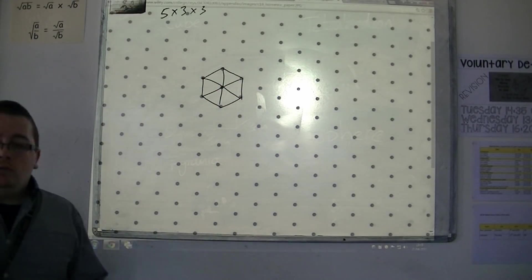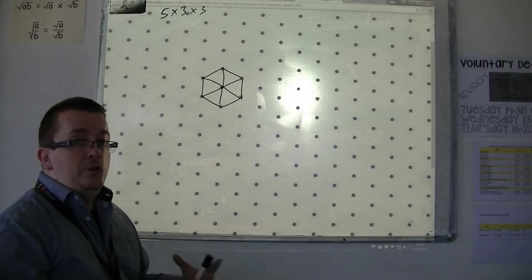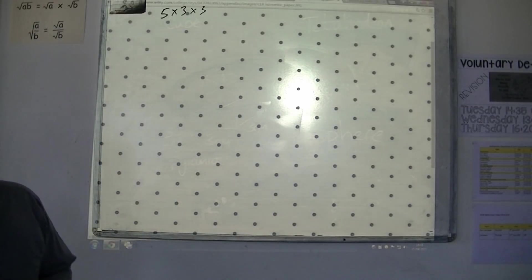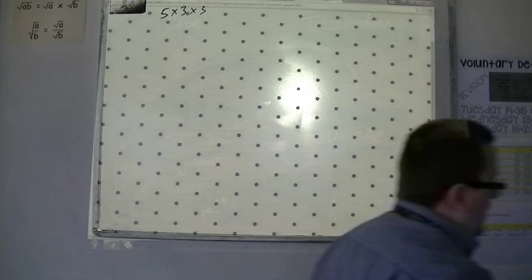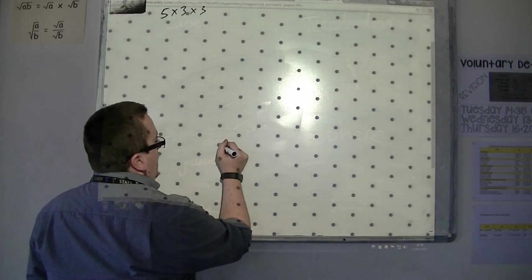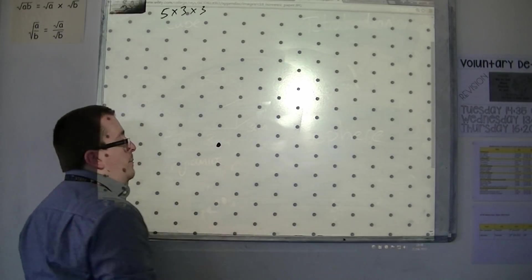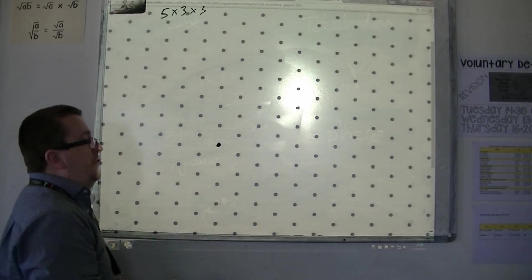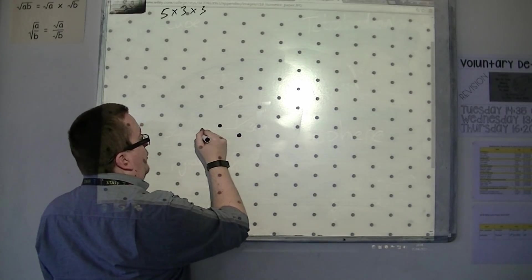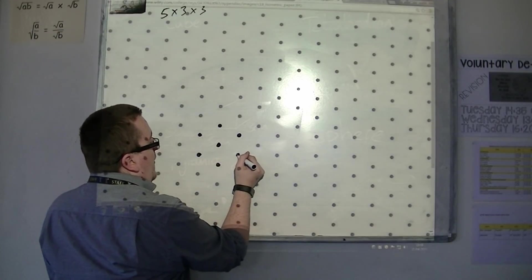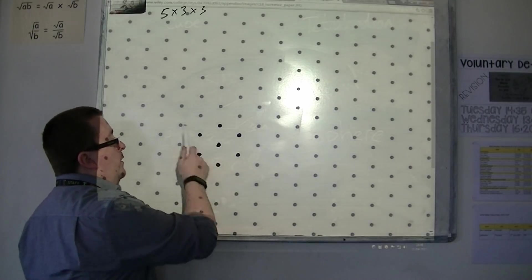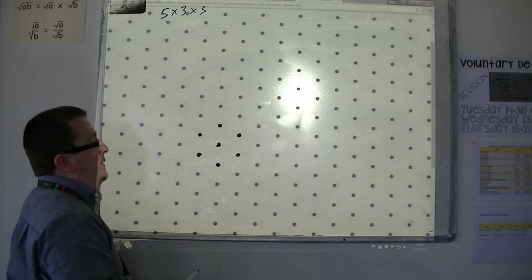Now, there are specific ways of using isometric paper. There are rules to how you can draw using it. Any point in order to draw a line, so if I choose that point there, must then connect with a point that it is closest to. So, within that hexagon, I can only draw a line through these points from that point at the center.